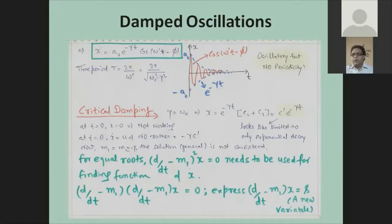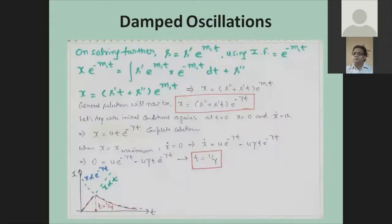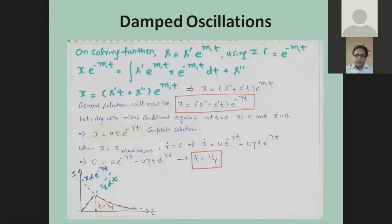Critical damping occurs when these two effects — natural oscillation and damping — are almost comparable to each other. This gives us a general solution in the form of two dependencies: one is a linear dependence, and the other is an exponential decay. We study this in terms of velocity — when does the velocity reach its maximum, and what is the interplay at that relaxation time?